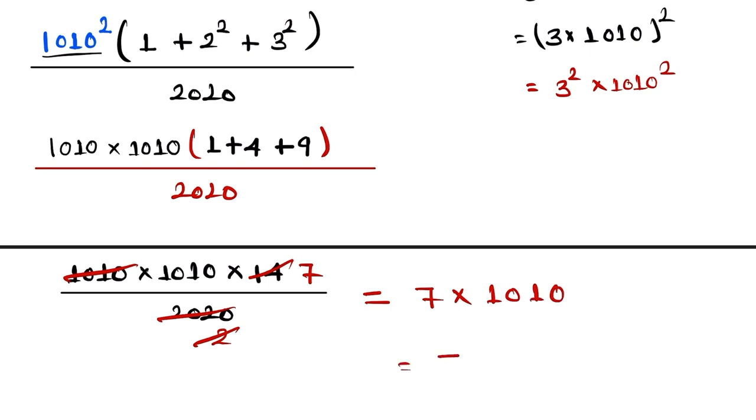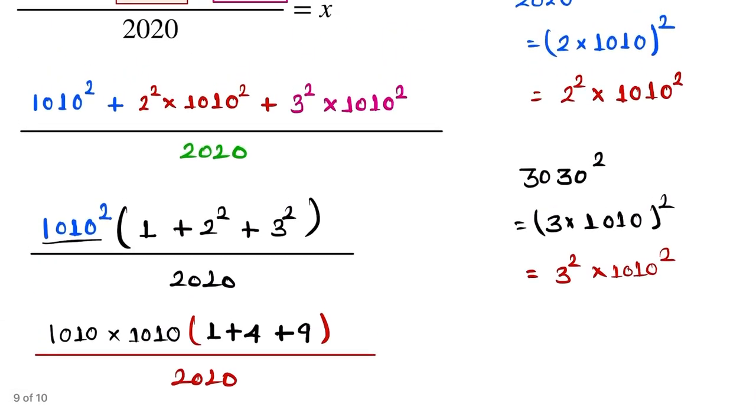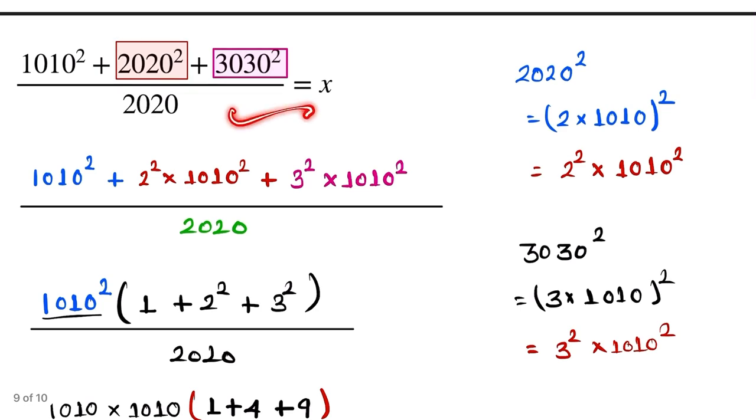When you multiply this, this one is 7070 and this one is the answer. The value of x when we evaluate this question, the value of x is equal to 7070 and this one is our final answer.